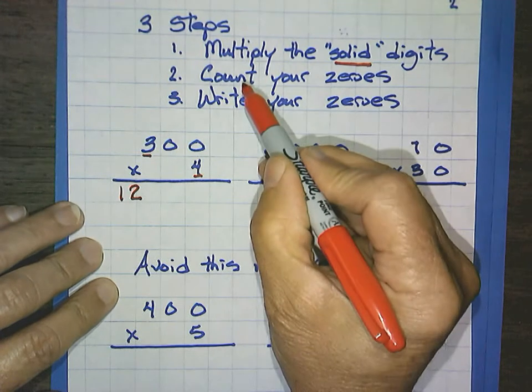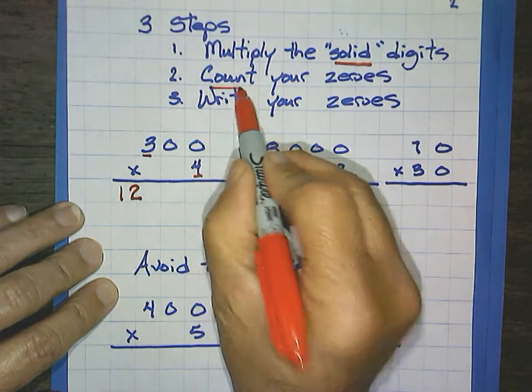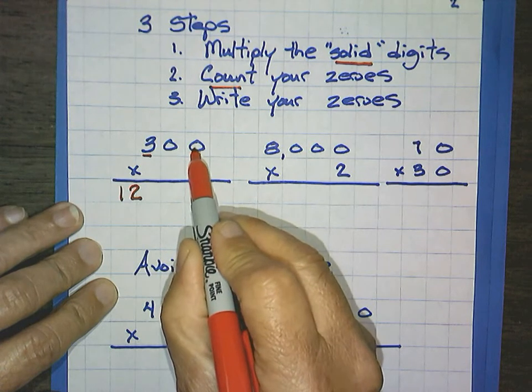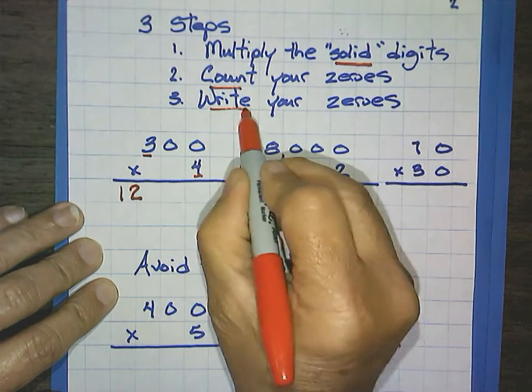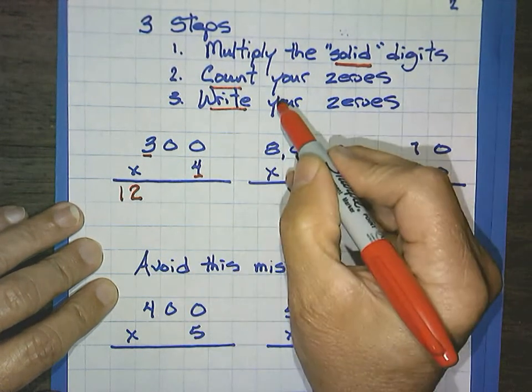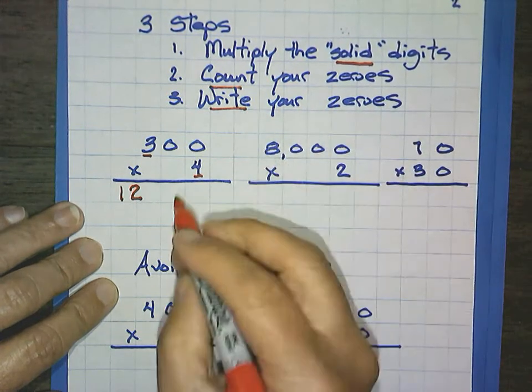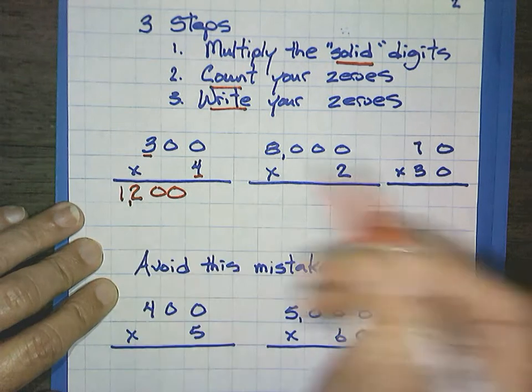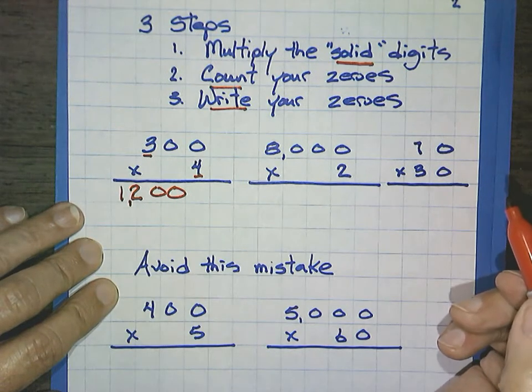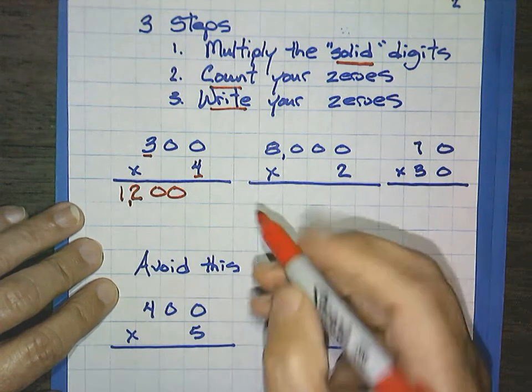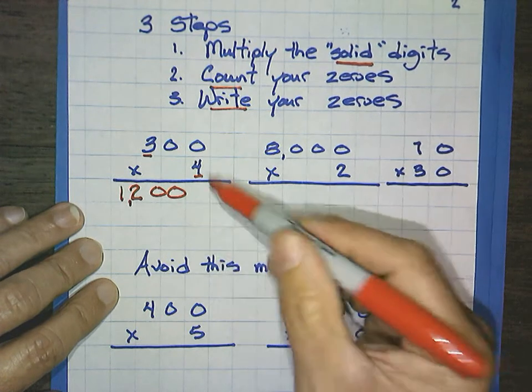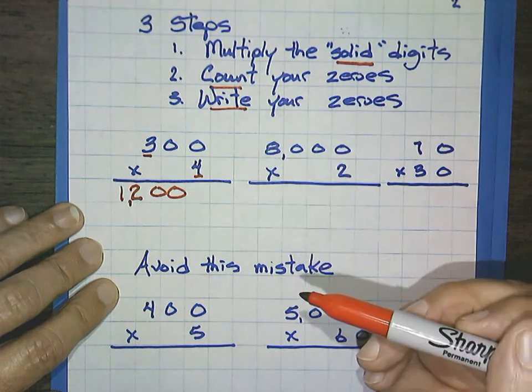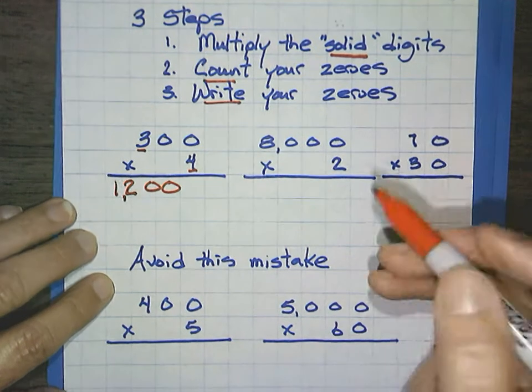I'm going to start with 3 times 4. And we know that 3 times 4 is 12. Second step is count your zeros. I'm seeing one, two, so I counted them. And last is to write. Well, if you count two, then you write two. So 1,200. Notice for this lesson, I'm not following the place value protocols as much because I'm just using another strategy. Just keep that in mind.